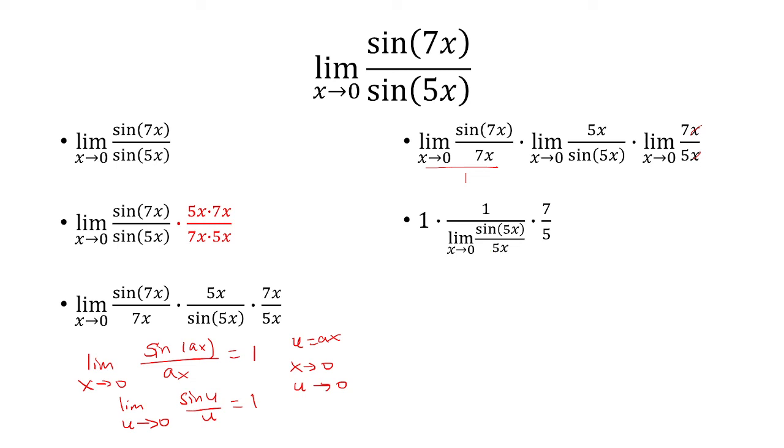The limit as x approaches 0 of sine of 5x over 5x is 1, and so our answer is going to be 7 fifths.